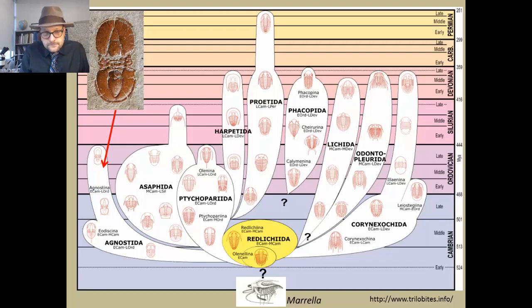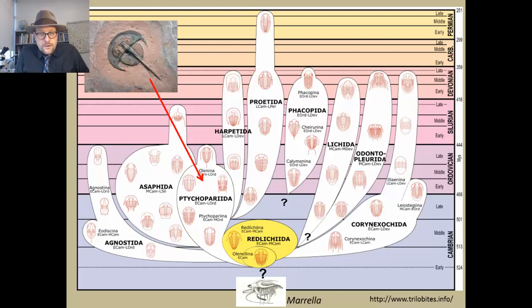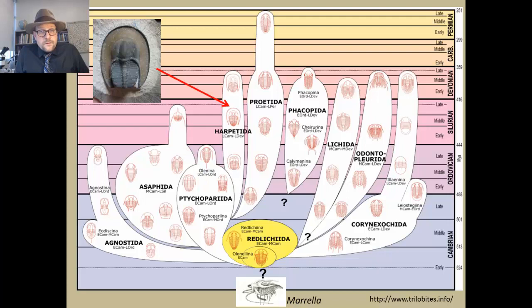The next group is the Asaphida. These include groups that go from the middle Cambrian up to the late Silurian. They include the members that have the long-stalked eyes. The Ptychopariida—this is the next group. These are known also from the middle Cambrian into the Ordovician. They include these groups that have very enlarged cephalon and sort of short little bodies or pleural lobes.